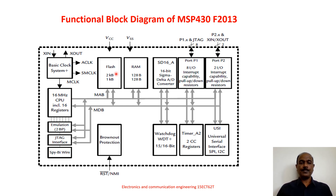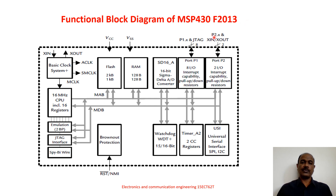There are two different types of memories — one for storing the code and one for storing the data temporarily. This MSP430F2013 microcontroller has two kilobytes of flash memory used for storing the program or code, and it also has 128 bytes of RAM for temporary data storage during program execution. These are the two memories available inside this MSP430F2013.